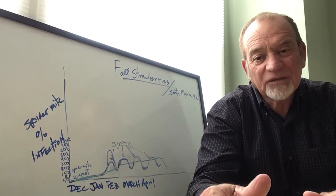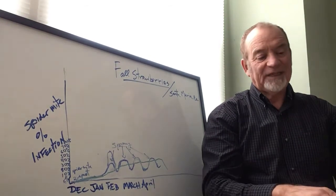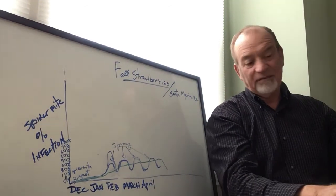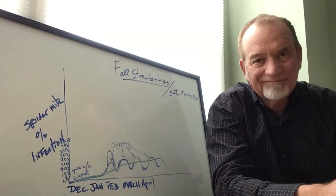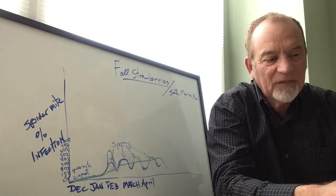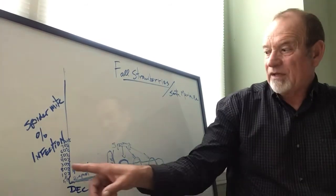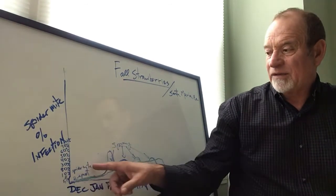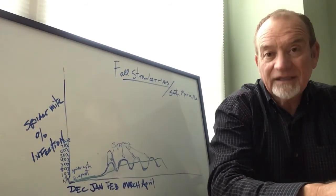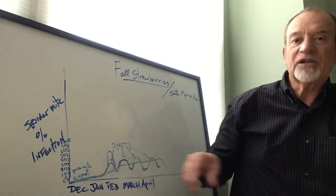I wouldn't spray for botrytis or mildew with helicopter, but not for spider mites. You have to have a tractor. We have to get underneath the leaves and control the 50-60% infection, bring it down so the persimilis can bring it down and keep it down, and we can even up the curve.